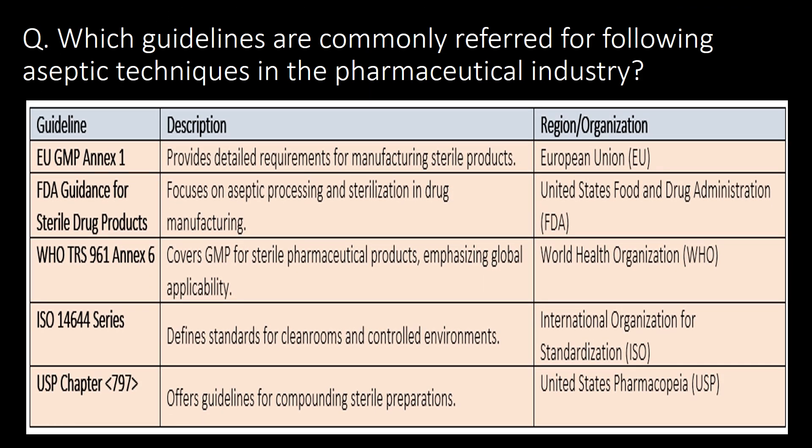A very important question: which guidelines are commonly referred to for following aseptic techniques in the pharmaceutical industry? EU GMP Annex 1, FDA's guidance for sterile drug products, WHO's Technical Report Series number 961 Annex 6, ISO 14644, and USP chapter 797 are commonly referred to for aseptic techniques in the pharmaceutical industry.